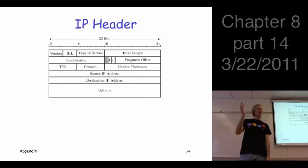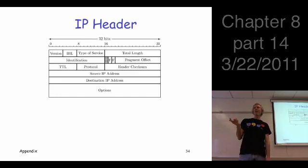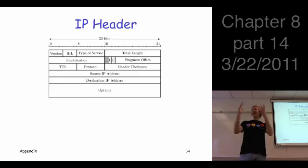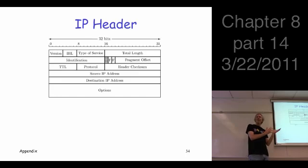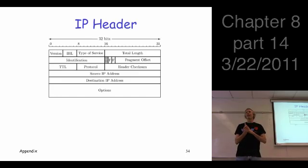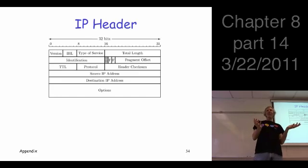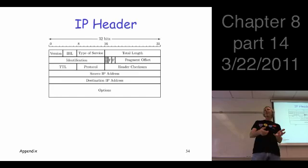So you put 255 in there. Every time the packet goes through a router or any hop on the network, that number gets decremented by one. When it gets to zero, the packet dies and goes to packet heaven. The purpose of that is to prevent packets from getting stuck in a loop — they don't circulate forever.